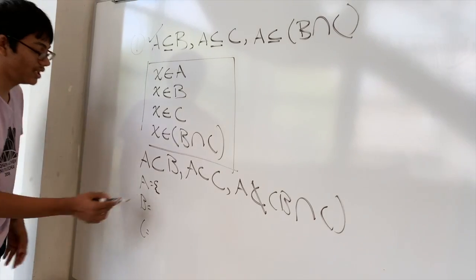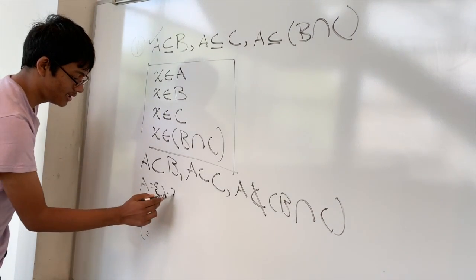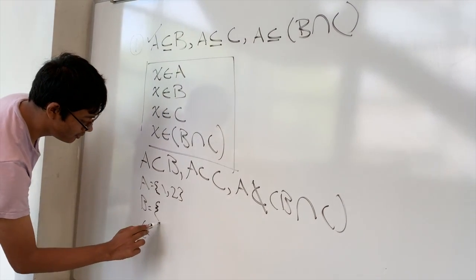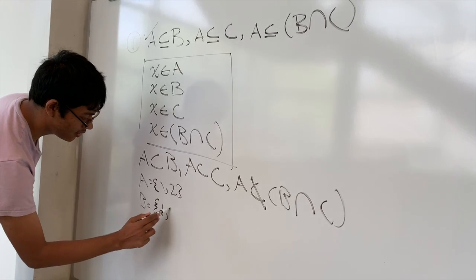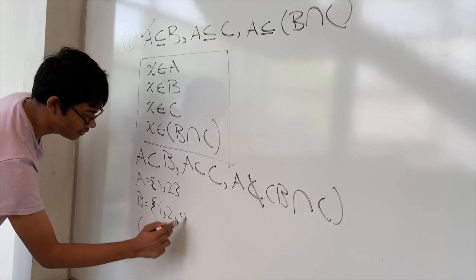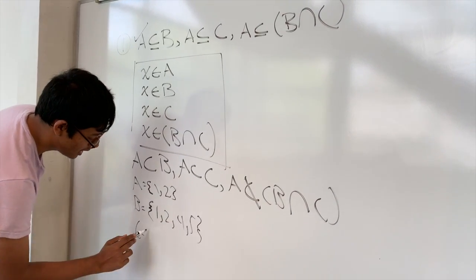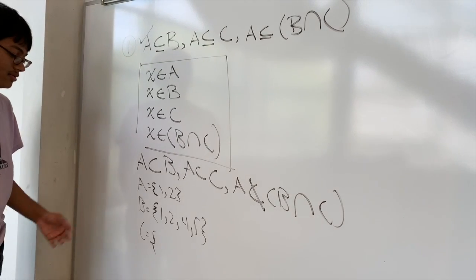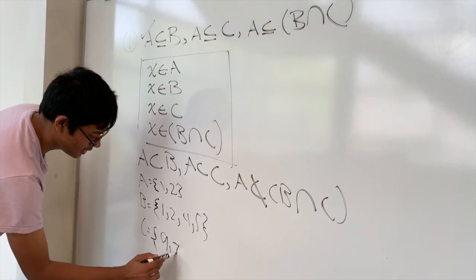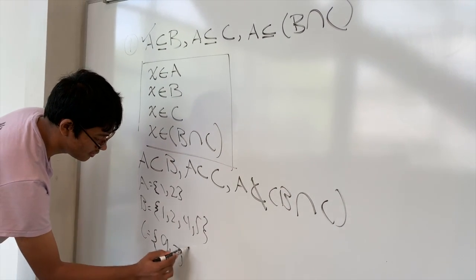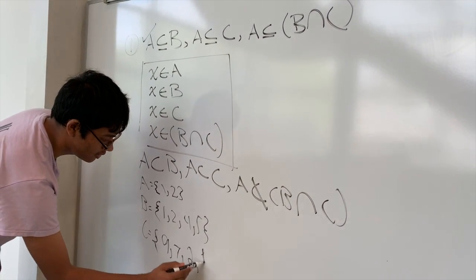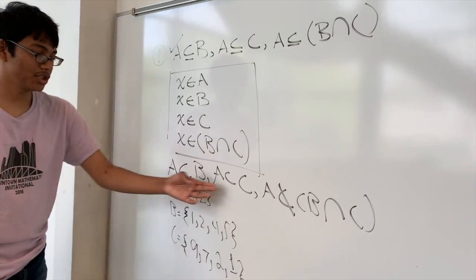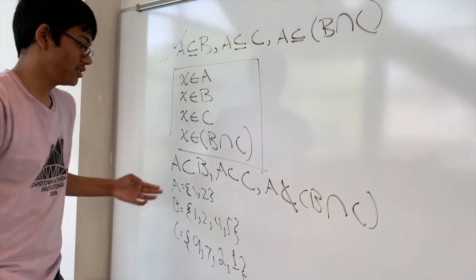So for A, you can have the elements 1 and 2. For B, you can have 1, 2, 4, 5. And for C, you can have 9, 7, 2, 1. So let's show that this conjecture is true.